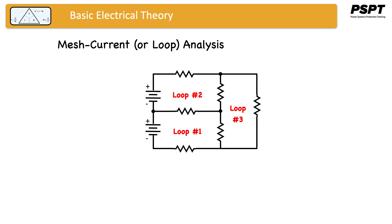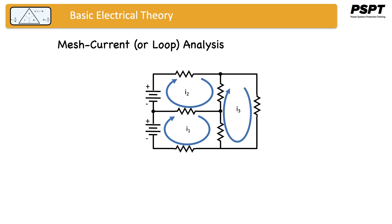It goes without saying that there is going to be current flowing in this circuit because of the voltage supplies or the batteries on the left-hand side of the loops. If we consider current flowing in each of the loops, I'm going to make an assumption right now that the current flowing in loop one looks like this, the current flowing in loop two looks like this, and the current flowing in loop three looks like this. The beauty of mesh current or loop analysis is that once we've made the assumption of the directions the currents are flowing in, we very quickly come to a set of mathematical equations which we can analyze to find the values for the currents.